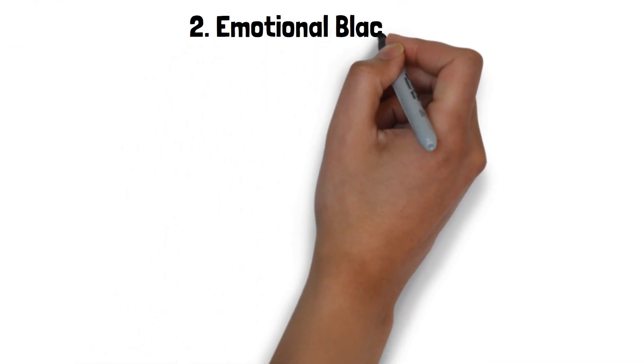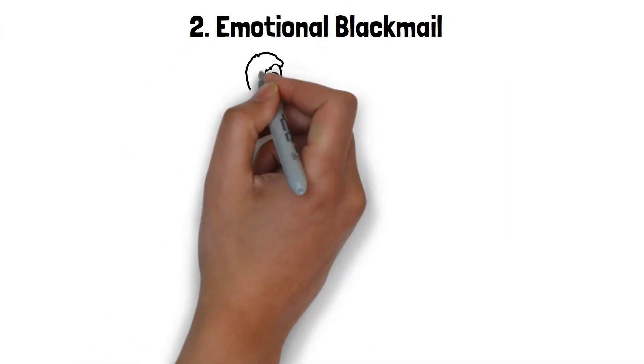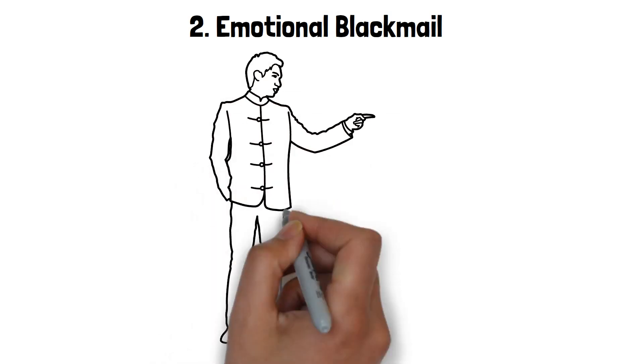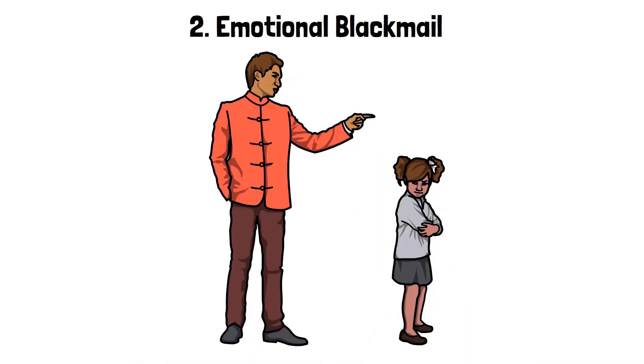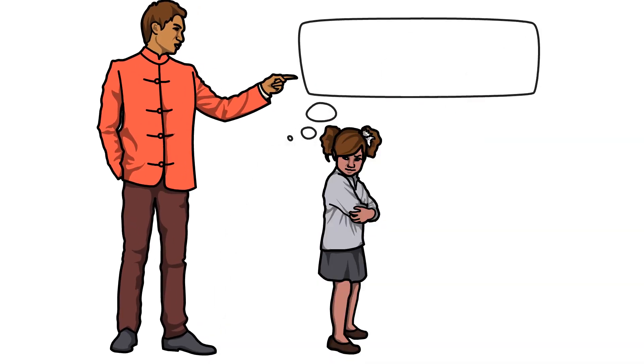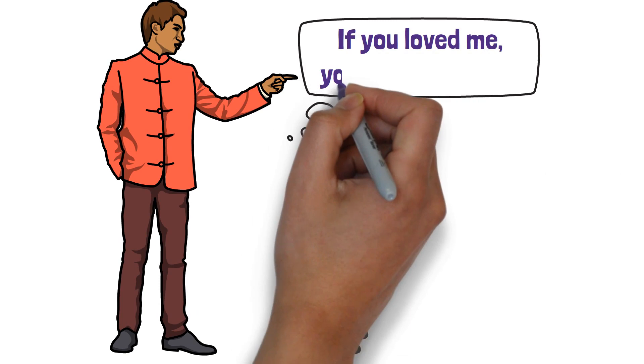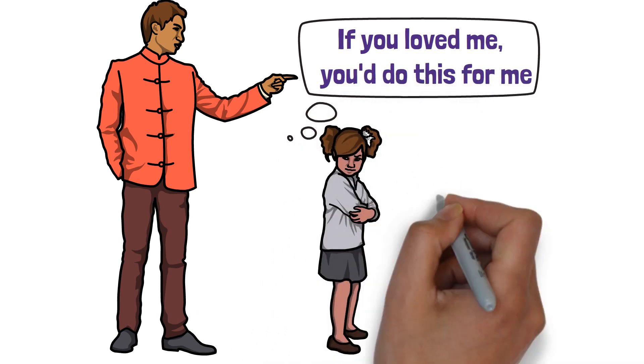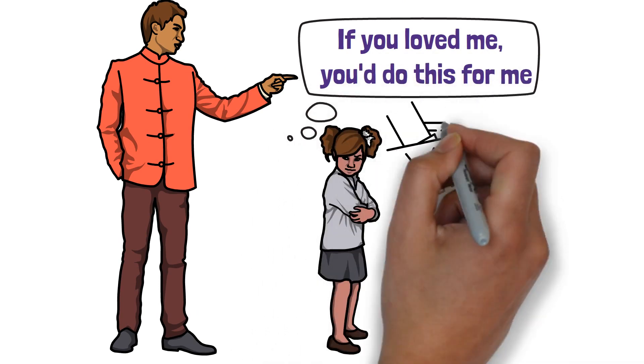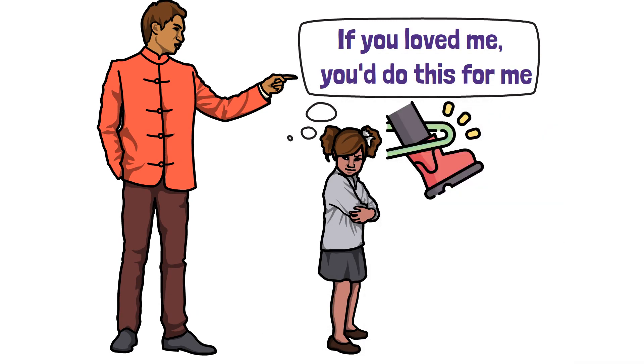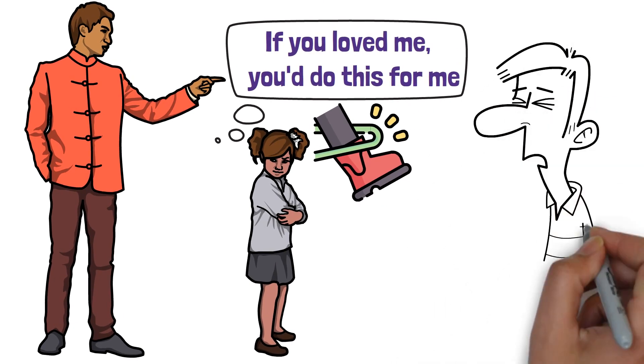2. Emotional Blackmail. Emotional blackmail is all about control. The manipulator preys on your feelings of guilt, obligation, or fear. Think of the time someone said, if you loved me, you'd do this for me. It's a tactic that traps you in a cycle, where you feel compelled to meet their demands, to avoid feeling guilty, or facing consequences.